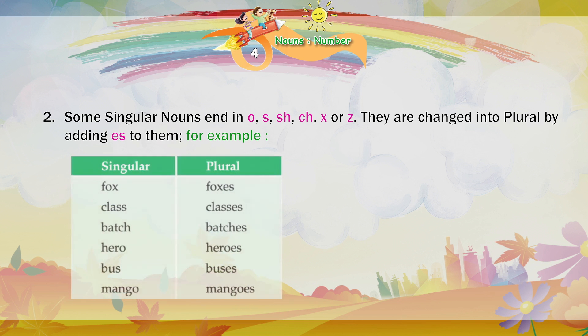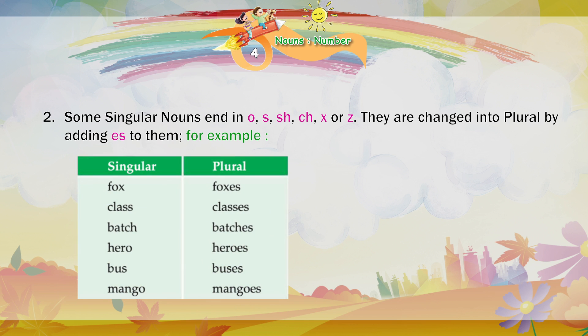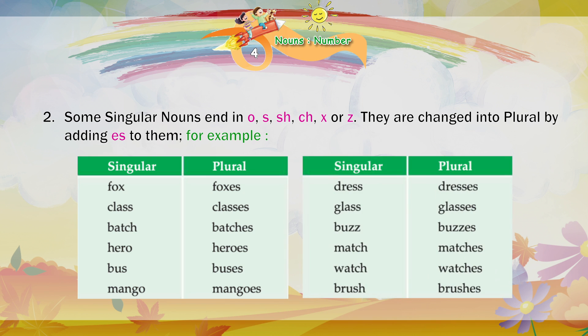For example — Singular — Plural. Fox — Foxes. Glass — Glasses. Batch — Patches. Hero — Heroes. Bus — Buses. Mango — Mangoes. Dress — Dresses. Glass — Glasses. Buzz — Buzzes. Match — Matches. Watch — Watches. Brush — Brushes.